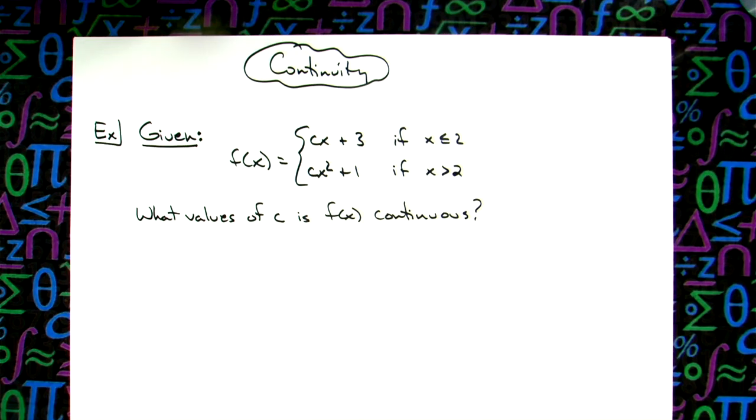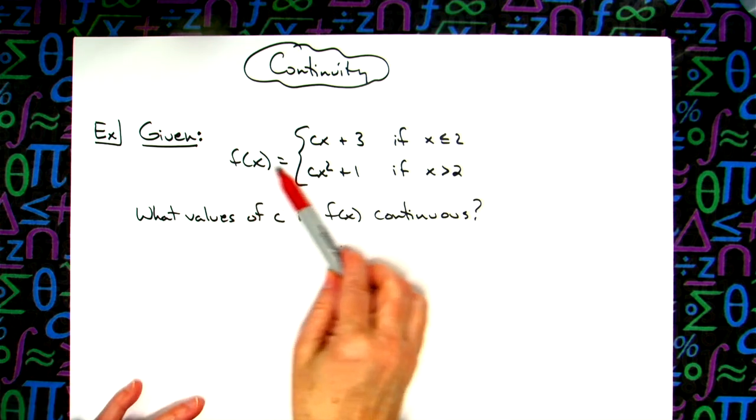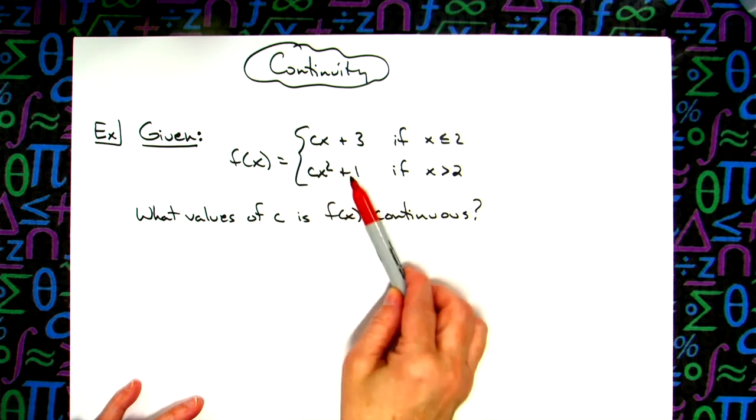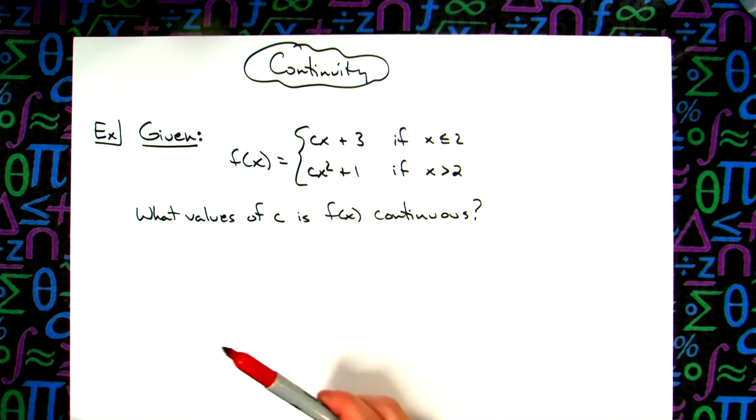In this video we're going to take a look at one quick question here on continuity. Oftentimes you are given a piecewise function such as this and you'll have some values in here of another variable, maybe an a or a c or a b, and they're going to ask you for what values of c is f of x continuous.